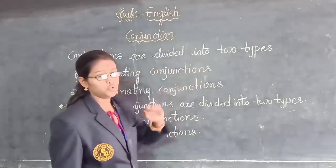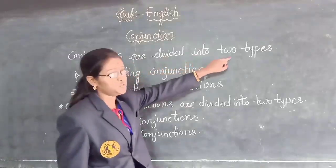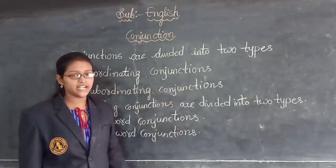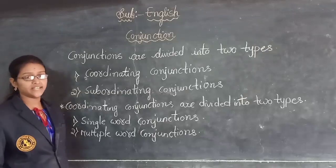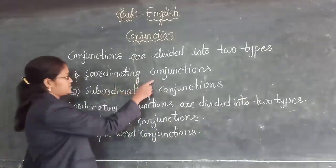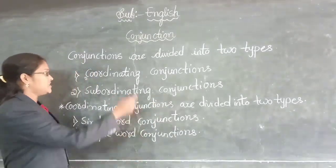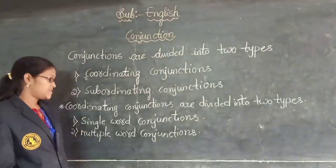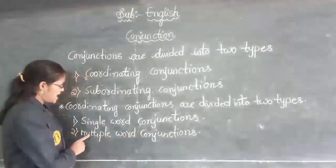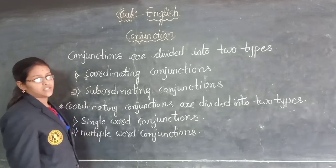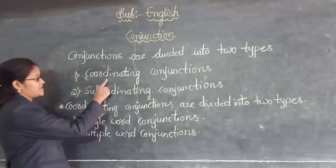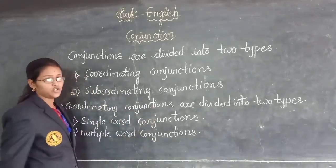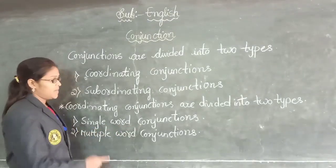Conjunctions are divided into two types. First is coordinating conjunctions and second is subordinating conjunctions. Again, these coordinating conjunctions are divided into two types: single word conjunctions and multiple word conjunctions.